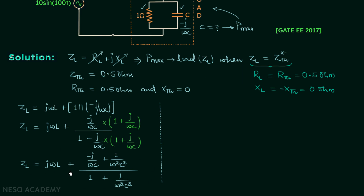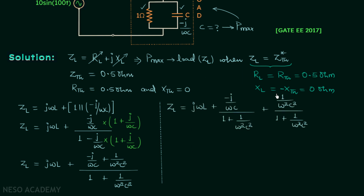Looking at what we calculated: terms containing j are imaginary, while 1/(Omega²·C²) has no j and is therefore real. The real part of ZL, which is RL, equals [1/(Omega²·C²)] divided by [1 + 1/(Omega²·C²)], and this must equal 0.5 Ohm.